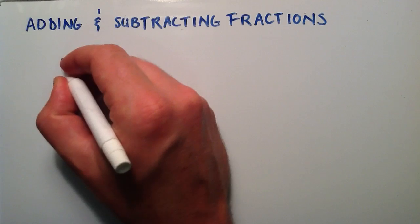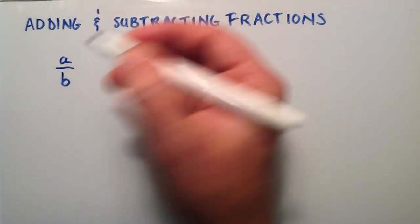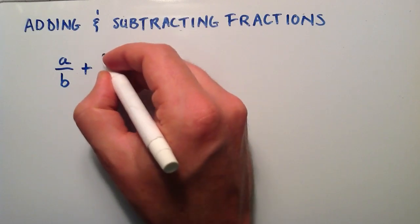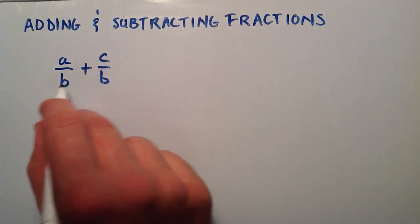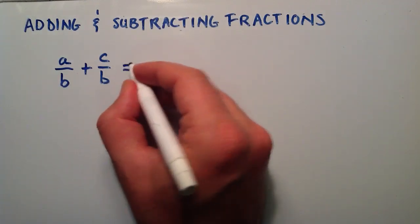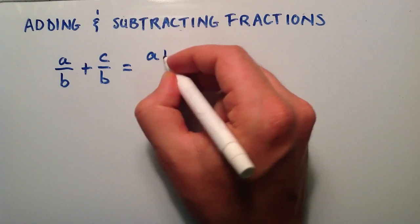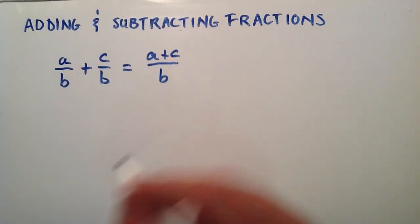In order to add or subtract fractions, let's say we have a divided by b, and we want to add that to c divided by b. Well, this is nice, since they both have the same denominator right here. We can simply add the two numerators together and divide that result by the same common denominator.